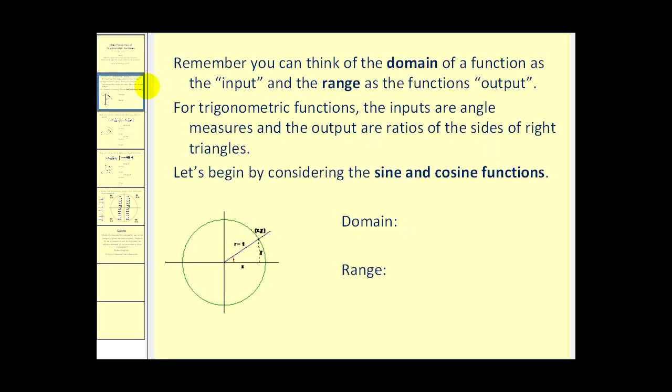Remember, you can think of the domain of a function as the inputs, and the range as the function's output. For trigonometric functions, the inputs are angle measures, and the outputs are ratios of the sides of right triangles.